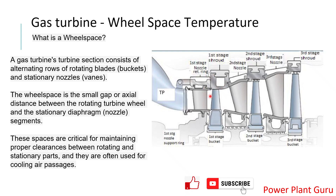The wheel space is the void space between the static and rotating blades, and it is very important. This gap should be kept to a minimum to avoid excessive losses. However, if it is too close, during thermal elongation the parts may rub against each other, which can cause catastrophic failure in the turbine. So you must avoid both excessive space and insufficient gap.